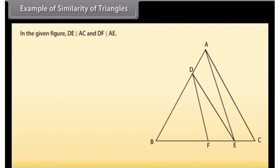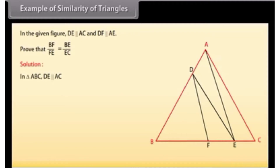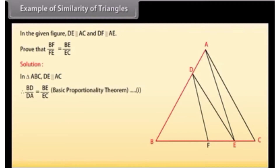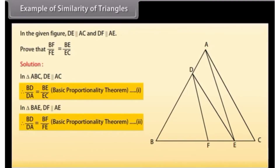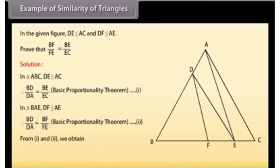Example: In the given figure, DE is parallel to AC and DF is parallel to AE. Prove that BF/FE = BE/EC. Solution: In triangle ABC, DE is parallel to AC. Therefore, BD/DA = BE/EC by the Basic Proportionality Theorem ... (1). In triangle BAE, DF is parallel to AE. Therefore, BD/DA = BF/FE by the Basic Proportionality Theorem ... (2). From (1) and (2), BE/EC = BF/FE.